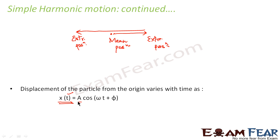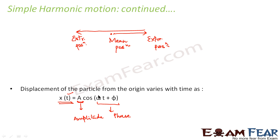Now let us understand what each of these terms means. A is the amplitude of the simple harmonic motion. Omega t plus phi — that is ωt + φ — is the phase of SHM. Omega (ω) is the angular frequency, which you already know. And phi (φ) is the phase constant. So these are three new terms: amplitude, phase, and phase constant. In the next slides I will explain each of them in detail.